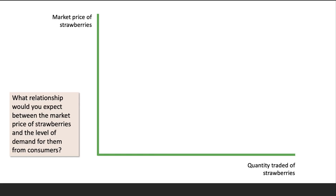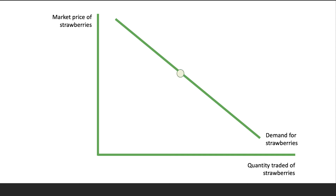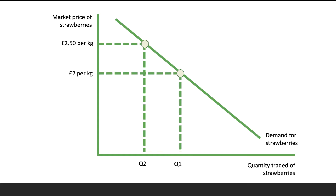We ask a simple question to start with: what relationship would you expect between the market price of strawberries and the level of demand for them - the quantity demanded at a given price from consumers? Normally we draw the relationship as an inverse one between price and quantity demanded. In other words, there is an inverse relationship between how much people have to pay and the quantity they're willing and able to buy. So at a given price - let's say two pounds per kilogram - the quantity sold could be Q1 in a given time period.